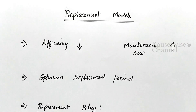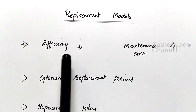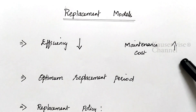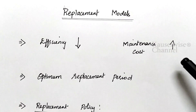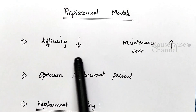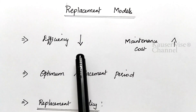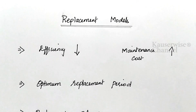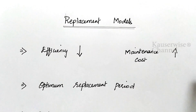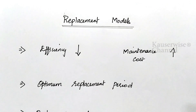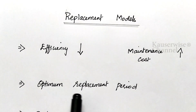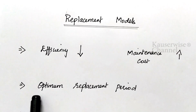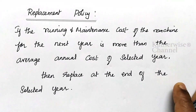Why do we need to replace an asset? The reason is that the value or efficiency of the asset gradually decreases with the passage of time. At the same time, the maintenance cost or running cost of a particular equipment gradually increases with the passage of time. Both items always move in opposite directions. At a certain point, the maintenance cost will be very high, so you need to replace the old asset with a new one. For that, you need to find the optimum replacement period — that is, when we need to replace the old asset with the new one.